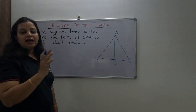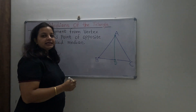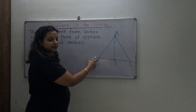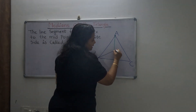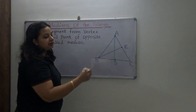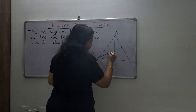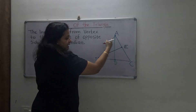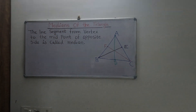We have three vertices, so we can make three medians in a triangle. From vertex B, the opposite side is CA, so you find the midpoint and call it E. The third vertex is C, and its opposite side is AB, giving the third median — the midpoint is called F.